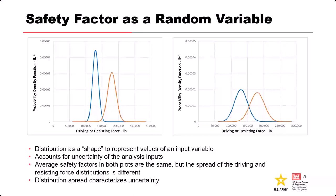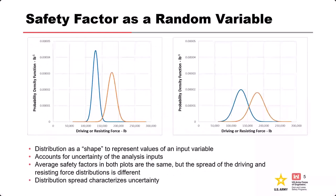Here are two sets of distributions for driving and resisting forces in a stability analysis. They each have the same best estimates — you'll notice that on both the left and right graphs. But you can see that the distributions are different shapes. One has a tighter spread and the other has a wider spread — the low is a little lower and the high is a little higher.